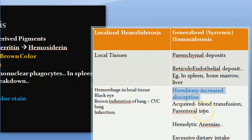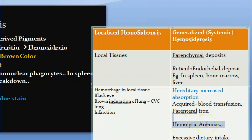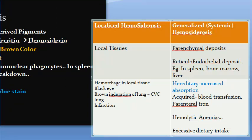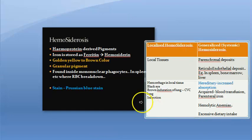In generalized hemosiderosis, causes include increased absorption, blood transfusion, parenteral iron therapy, hemolytic anemias such as thalassemia, and excessive dietary iron intake. That covers hemosiderosis.